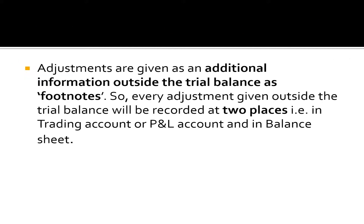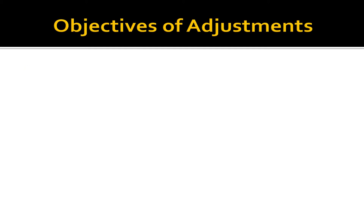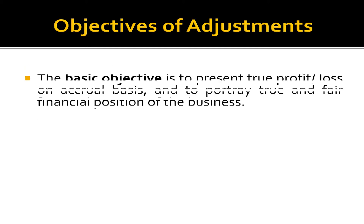Adjustments are given as additional information outside the trial balance as footnotes. Every adjustment given outside the trial balance will be recorded at two places — in the trading account or P&L account, and in the balance sheet. The basic objective is to present true profit or loss on accrual basis and to portray a true and fair financial position of the business.